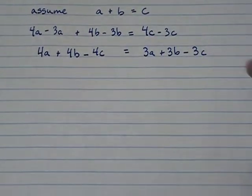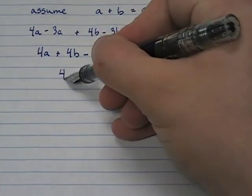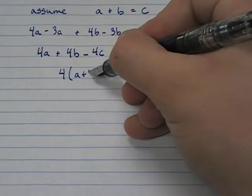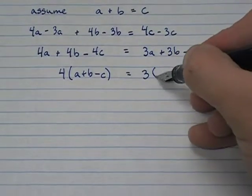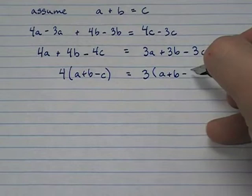Now I'm going to factor each side. If I factor the left-hand side, I get 4 times A plus B minus C. And if I factor the right-hand side, I get 3 times A plus B minus C.